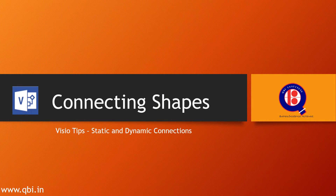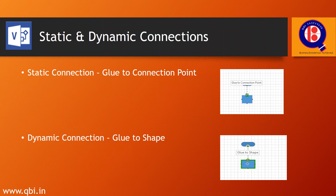Let's learn connecting shapes in Visio through static and dynamic connections. Visio shapes can be connected through two types of connection: a static connection and a dynamic connection. In a static connection, you connect one shape to another through what we call glue to the shape.